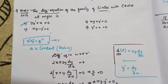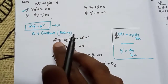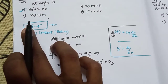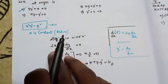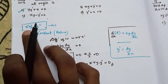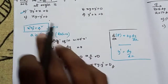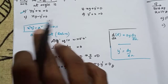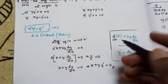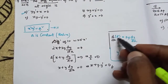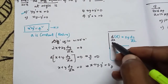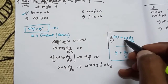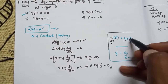We look at the differential equation. If you differentiate with respect to x: the derivative of x² is 2x, and y² is differentiated using the chain rule. So we write 2x plus 2y into dy/dx. Since a is constant, we can write 2y times dy/dx.